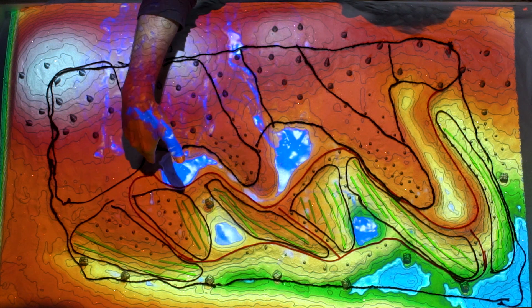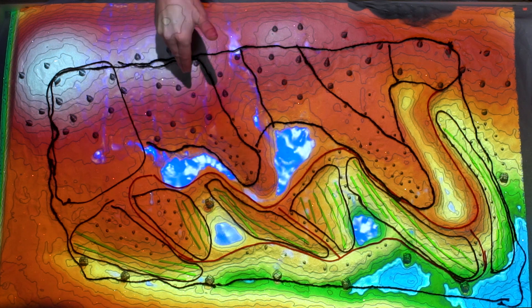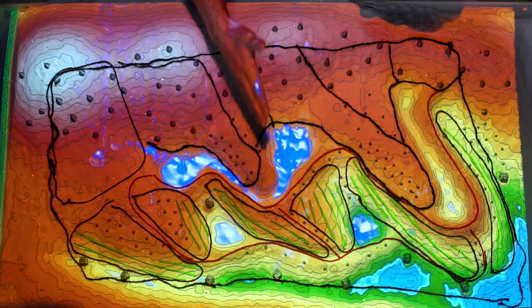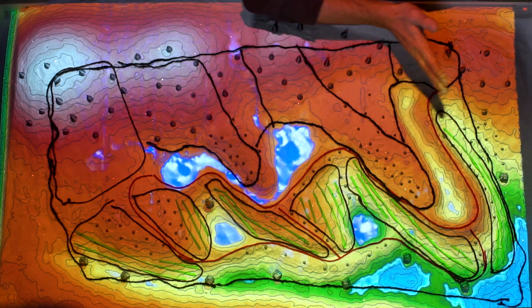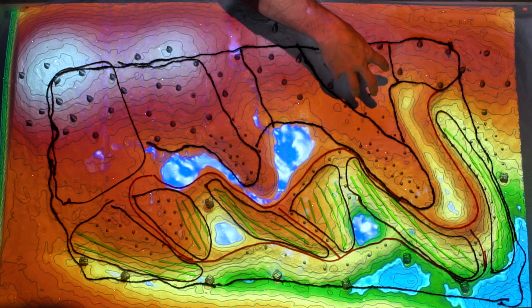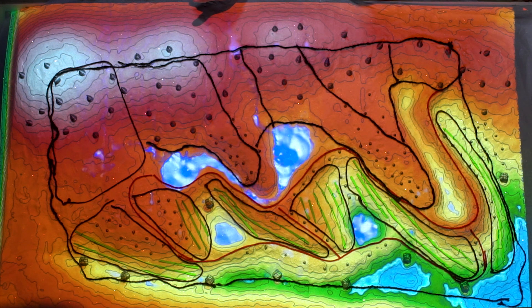Going up the drainage, down the ridge, drainage to ridge, ridge to drainage, drainage to ridge, ridge to drainage, drainage to ridge. Each of these blocks here have a similar degree of slope for the most part over them.